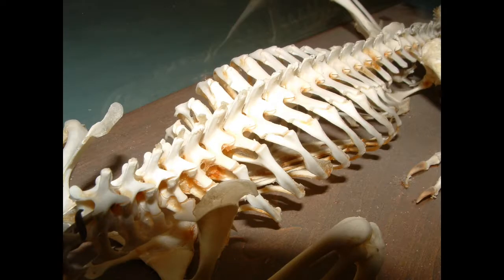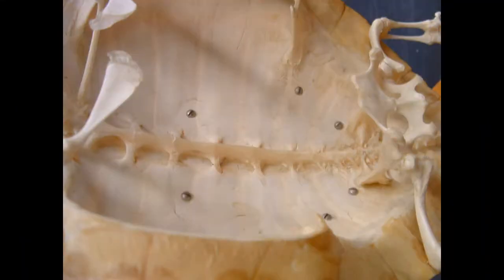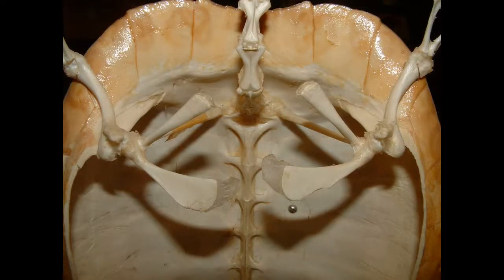In different amniote lineages, the vertebral column and thorax could be modified. So, for example, in turtles, the broadened ribs and vertebrae fuse to dermal bones to help form the shell.